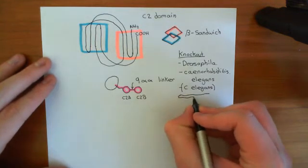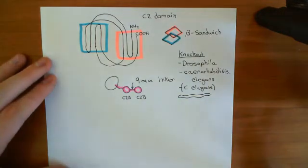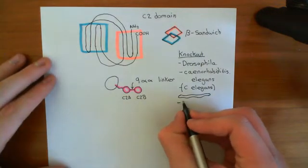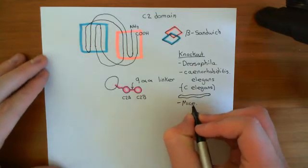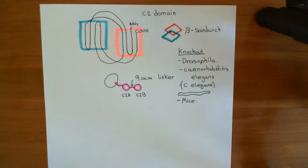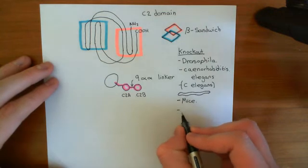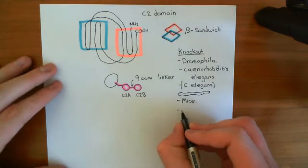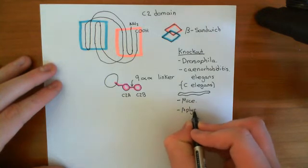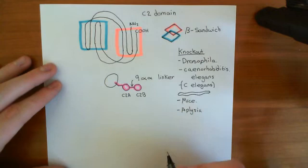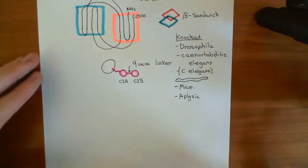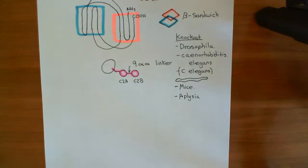C. elegans breed nice and quickly, and again there are very few people who will campaign against doing experiments on worms. You can also do knockout experiments on mice now, which we often do when we want to perform knockouts. And finally, the other species often used for knockout experiments specifically when looking at neurotransmission is Aplysia — basically a species of sea slug. The reason they're often used in nerve and neurotransmission experiments is because they have very large axon terminals, which makes it easier to do experiments with them.